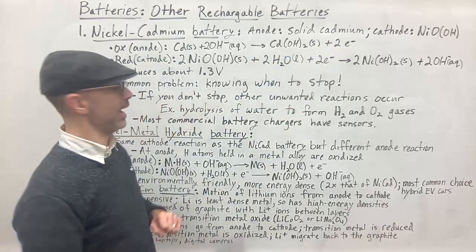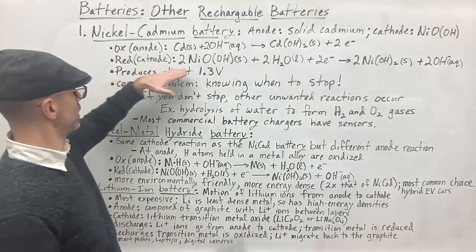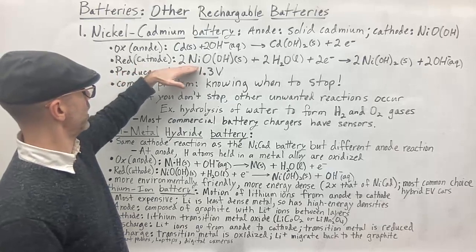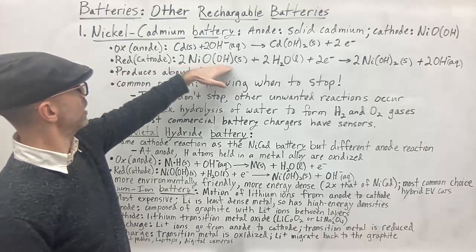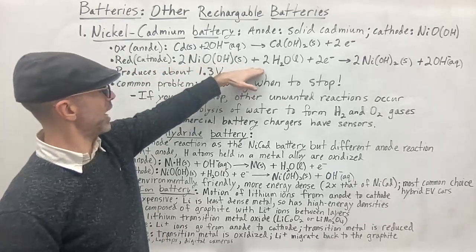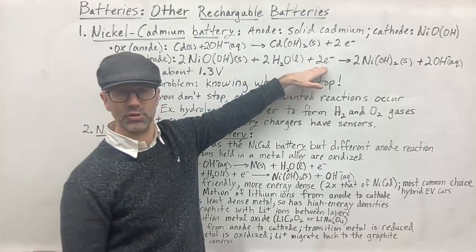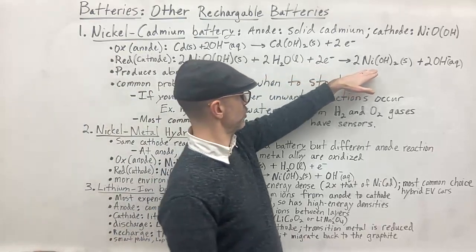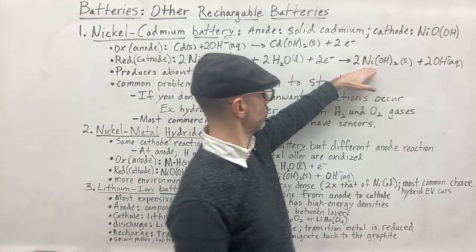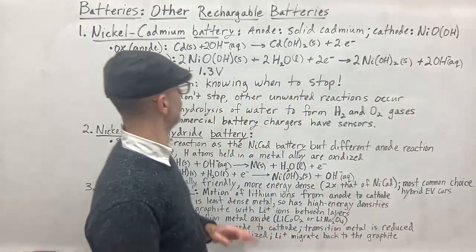You add cadmium reacting with OH minus hydroxide ion and that's going to produce your cadmium hydroxide plus two electrons. And then at the cathode you have the reduction. So here you have your NiOOH solid that's going to react with water and the two electrons. And then that's going to produce a nickel hydroxide, a nickel two hydroxide and hydroxide ion.